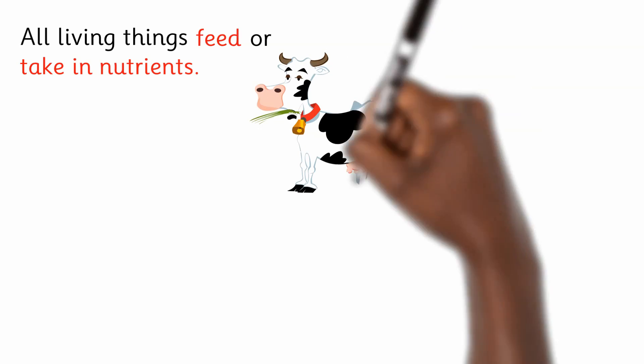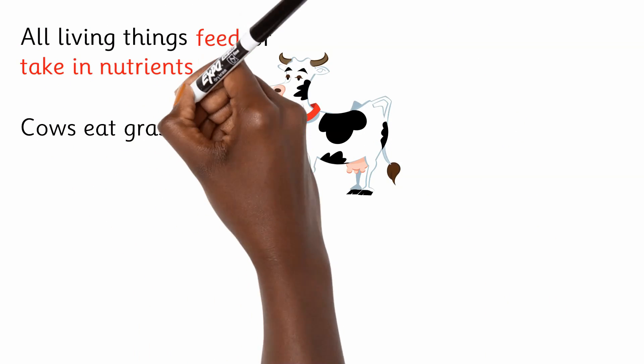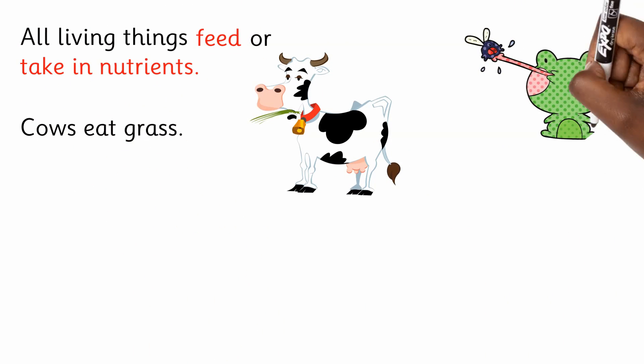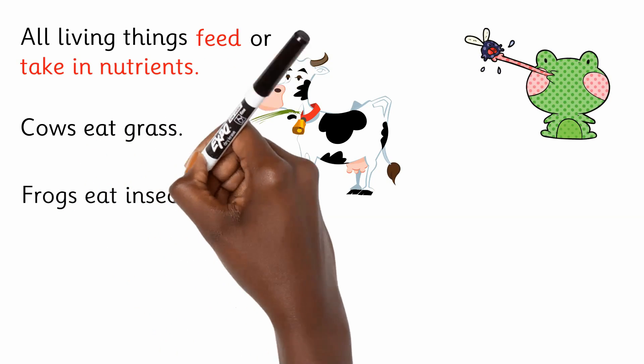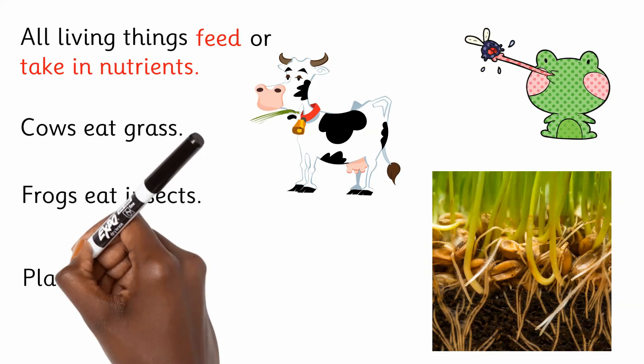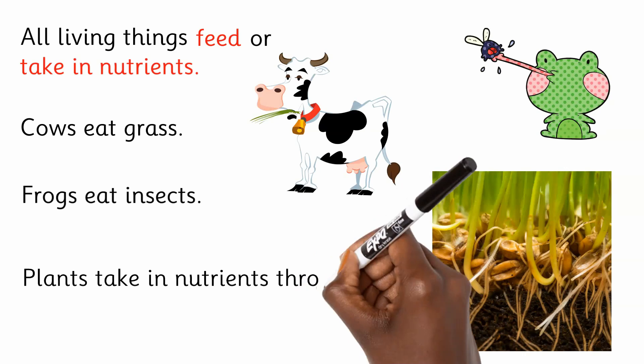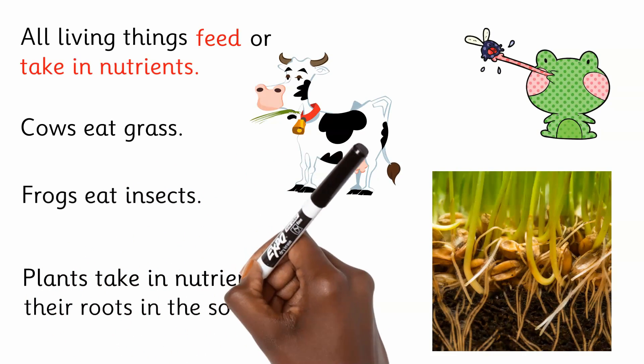All living things feed or take in nutrients. Cows eat grass. Frogs eat insects. Plants take in nutrients through their roots in the soil.